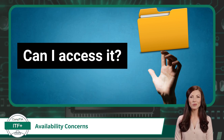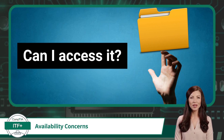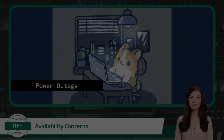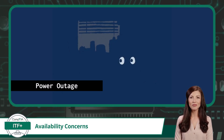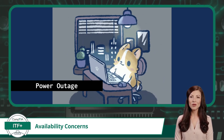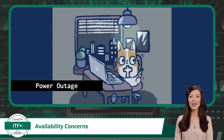Ensuring high availability often requires meticulous planning, regular maintenance, and proactive monitoring to prevent and address potential issues that might disrupt access. Any downtime or inaccessibility can hinder productivity, disrupt operations, and impact user trust. Within IT, there are many factors that can threaten data availability, and for the CompTIA ITF Plus Certification Exam, we will cover a few of the most common availability concerns that can bring our IT world to a standstill.